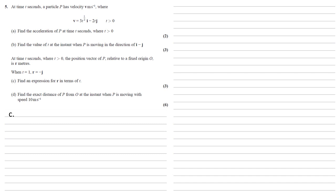So for part c, we need to find an expression for r in terms of t. So again, we're going to start from our velocity that we've been given. Our position vector is the integral of velocity, so we're going the opposite way to when we're finding acceleration. So integrating v, we're going to integrate our 3t to the half times i minus 2tj with respect to t.